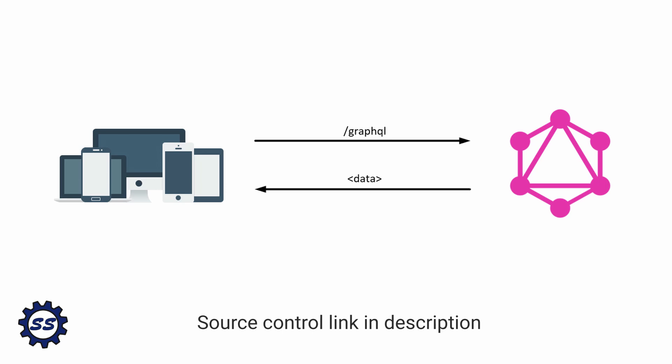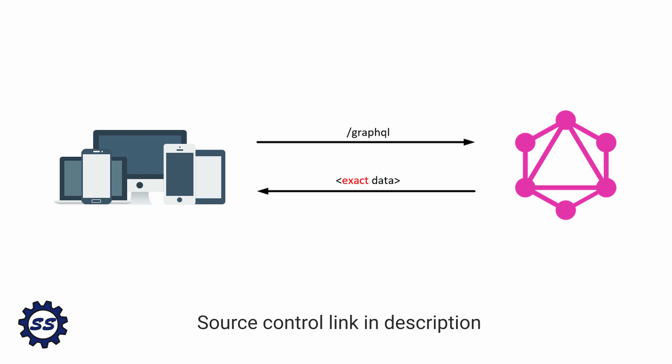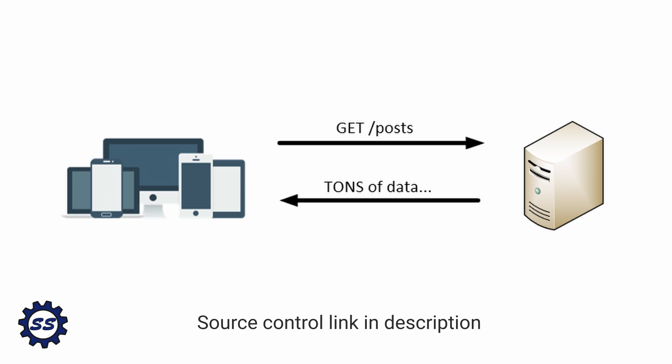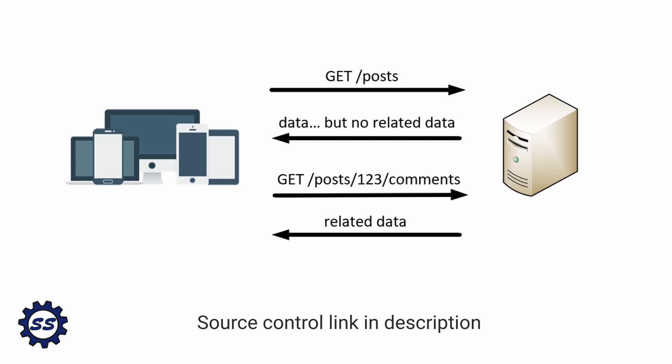Another major feature of GraphQL is that the client can ask the GraphQL server for the exact data that it needs. This is much different than something like REST, where the client might get tons of data back, or it might not get enough data and have to make another request, which is pretty terrible if the network latency is bad.